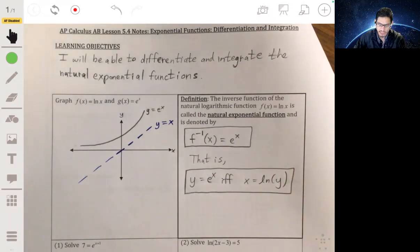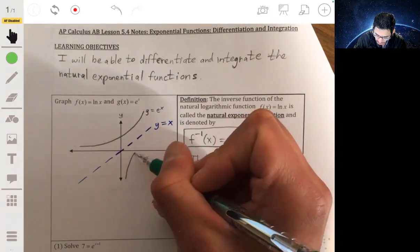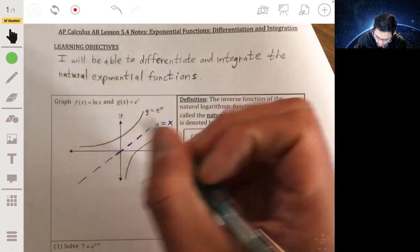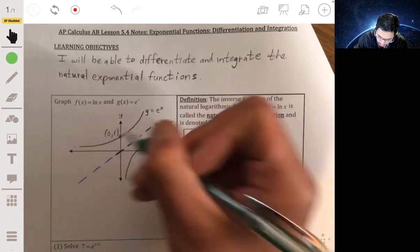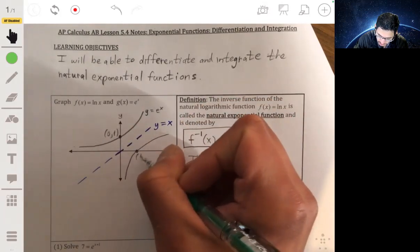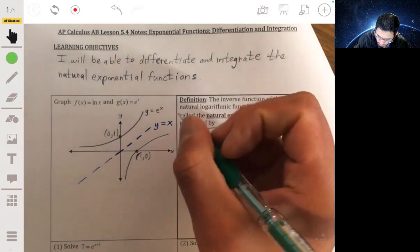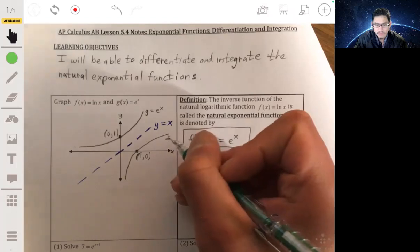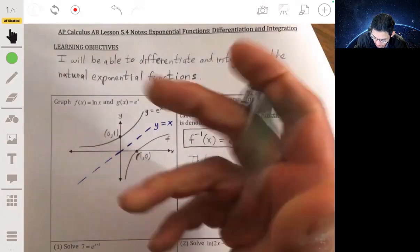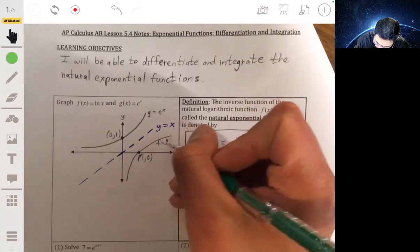So if you were to draw a sketch, essentially, you're going to want to reflect this in this sort of manner. And this intercept would be 0, 1, and that means that this would be a 1, 0. This is your f, your f of x function. f of x, f is the natural log of x.